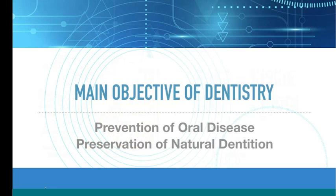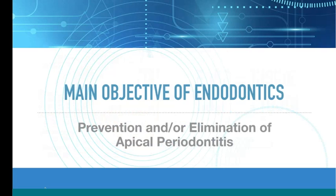What's the main objective of dentistry? We want to provide our patients with the best service, maintain their dentition hopefully for a lifetime, and prevent oral disease. When we look at the main objective of endo, it's to prevent and/or eliminate apical periodontitis. We want to prevent infection, and if infection is already there before we treat the tooth, we want to eliminate that.